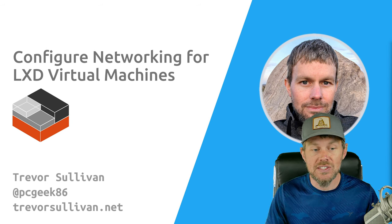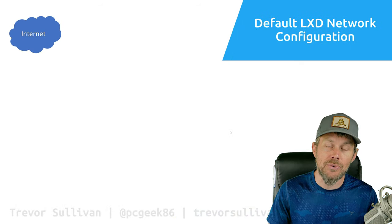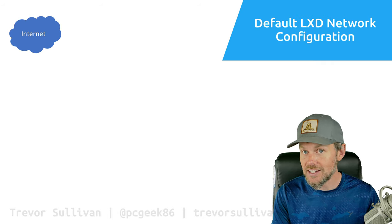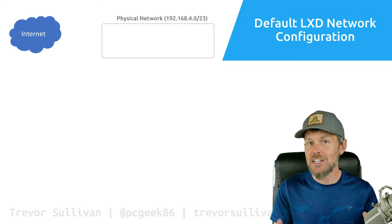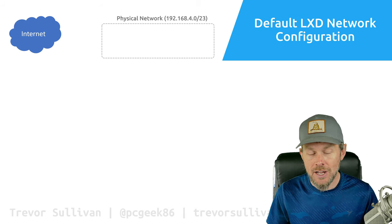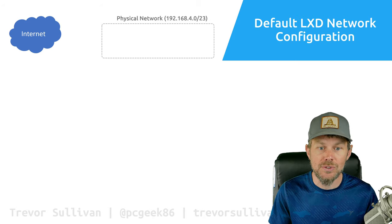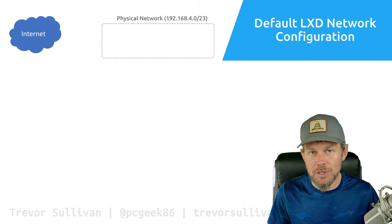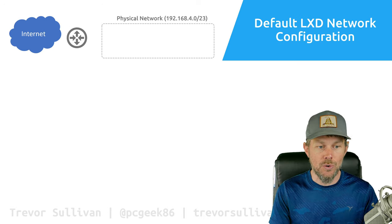Let's jump into this topic. We're going to be covering what the default network configuration of LXD actually looks like when you run the LXD init command. For starters, we've got the internet and our internal network. I'm going to use my home network as an example, with a CIDR block like 192.168.4.0/23 — that's your internal IPv4 address space used to connect various devices to your network.